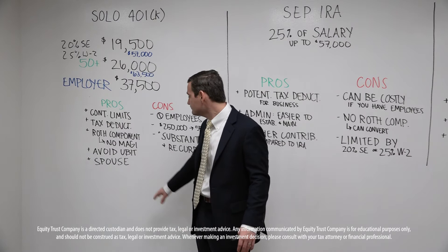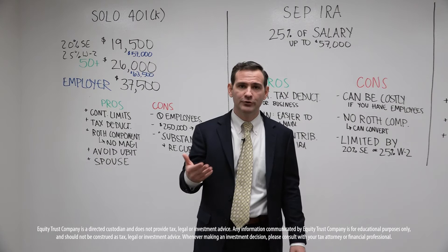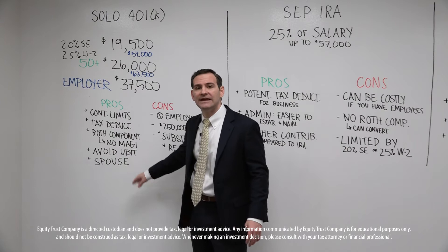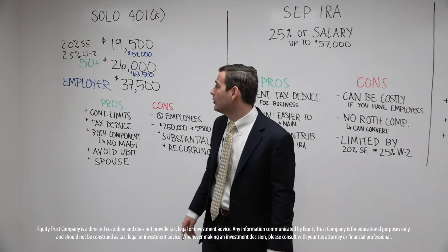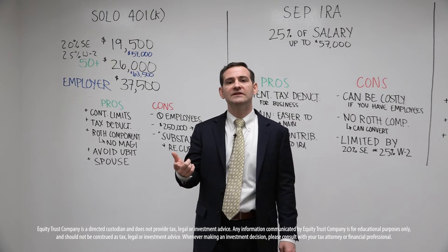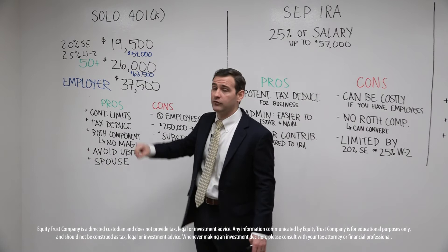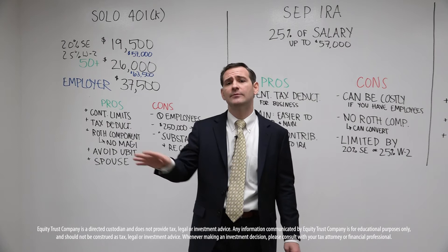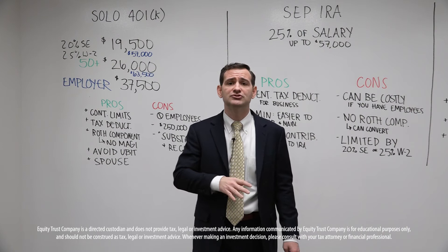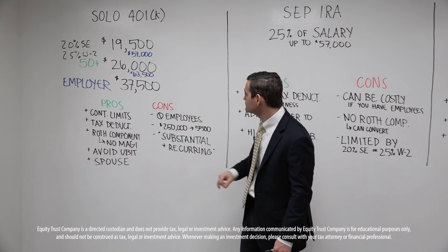Keep in mind that UBIT mitigation does not apply if you're running your solo 401k like a trader business — it only applies to debt-leveraged real estate. Last but not least, if you have a spouse working for you in your business, even if they're not a partner, as long as you are paying them a salary and they are claiming that income, they can also take advantage of the solo 401k. This leads to requirement number two: you cannot have any W-2 employees, with the exception of a spouse.